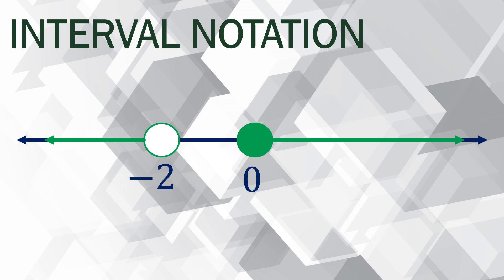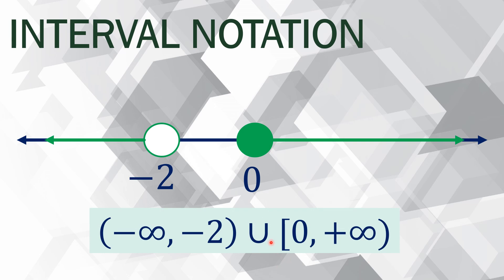There are also cases like this: from 2, it is unshaded, and the green part moves to the left infinitely. But there is a gap — a portion that is not included. From 0, it is shaded and moves to the right. We use the union symbol here. We are combining all elements from negative infinity to negative 2 — all numbers less than negative 2 — plus all numbers greater than or equal to 0, combined together as one set. That is the significance of the union of sets.